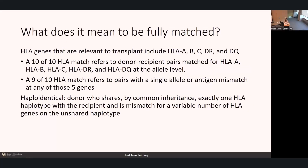What does it mean to be fully matched? The HLA genes relevant to the transplant process include HLA-A, B, C, DR, and DQ. A perfect match is now considered a 10 out of 10 HLA match—donor-recipient pairs that are perfect matches at the allele level at all five gene sites. We can also have mismatched related or unrelated donors, meaning a mismatch at any one of those five genes—for example a 9 out of 10 match. A haploidentical donor shares exactly one HLA haplotype by common inheritance and is mismatched for a variable number of genes on the unshared haplotype.